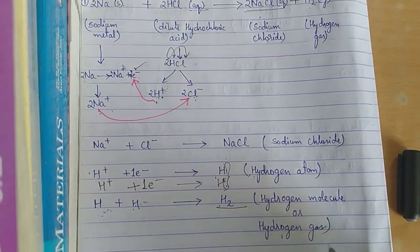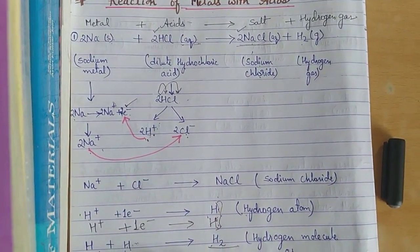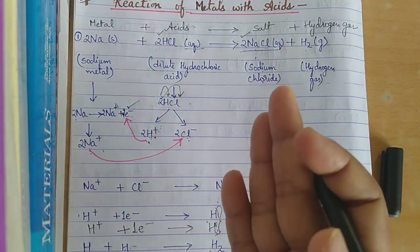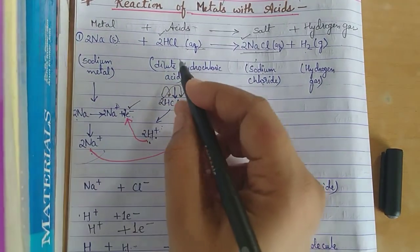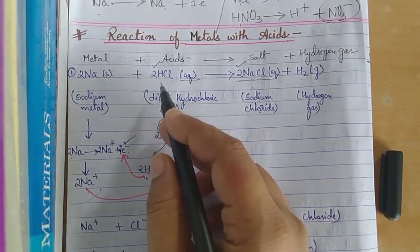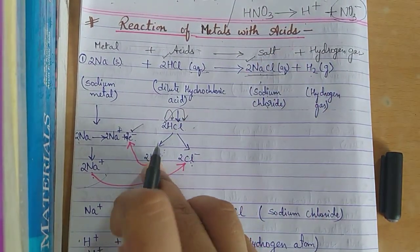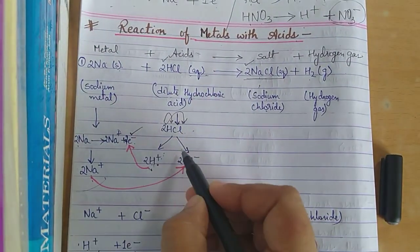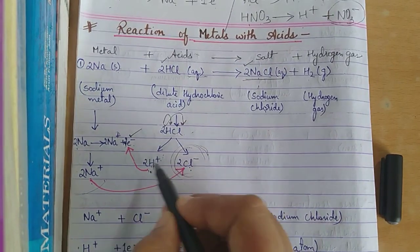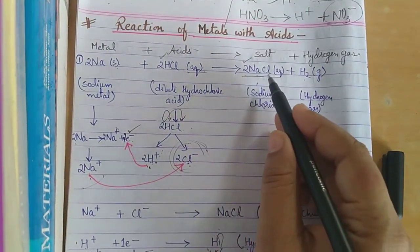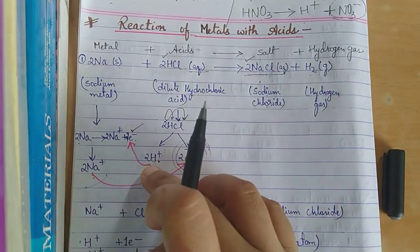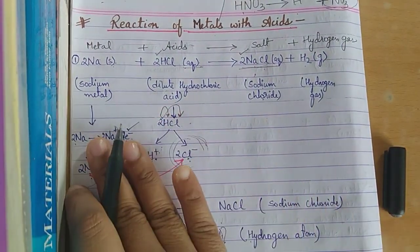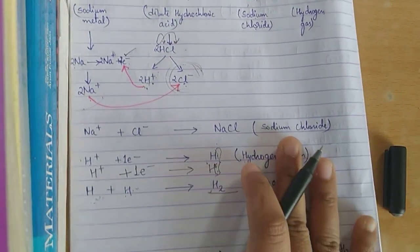The two hydrogen atoms join together to form a hydrogen molecule — hydrogen gas. So the shortcut: all metals are electropositive, so they form a positive ion. All acids donate H⁺, leaving a negative anion. The metal's positive ion bonds with the anion to form salt, and H⁺ accepts electrons to form hydrogen gas.